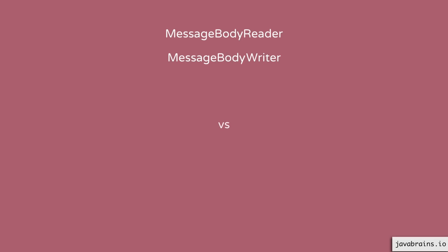These two classes are very important when you are doing marshalling and unmarshalling of types in Java. One thing that does confuse people is the difference between message body reader and message body writer versus what we've learned so far, which is the param converter. We did an implementation of param converter where we converted a string to a custom data type. So how is it different from message body reader and message body writer?